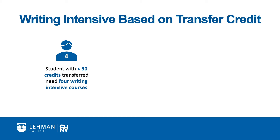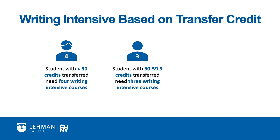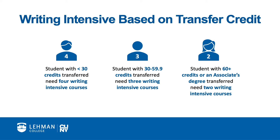Students who have less than 30 credits transferred must complete four writing intensive courses at Lehman. Students who transferred between 30 but less than 60 credits must complete three writing intensive courses at Lehman. And students who have 60 or more transfer credits or a completed associate's degree must complete two writing intensive courses at Lehman.